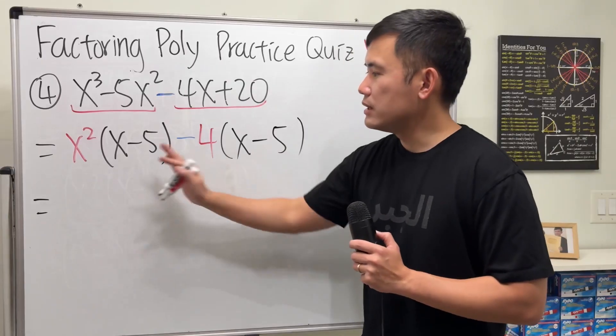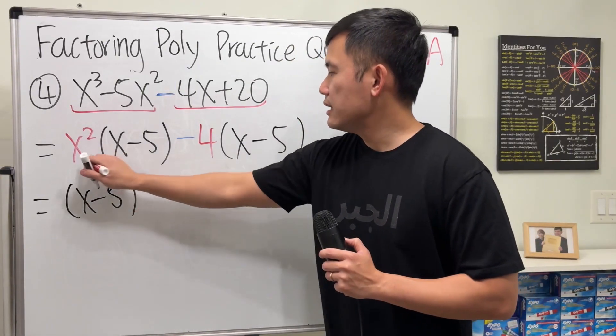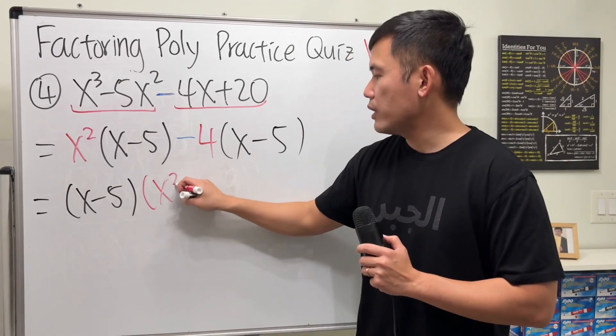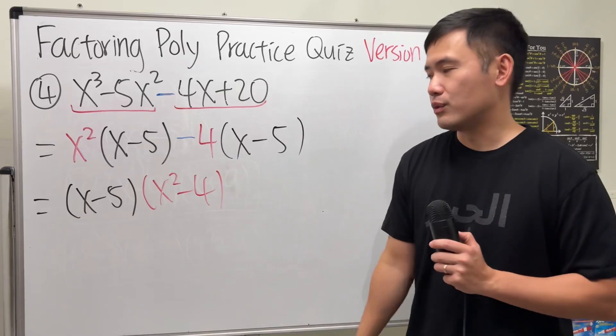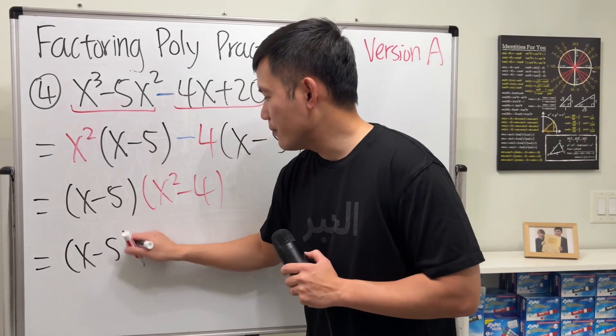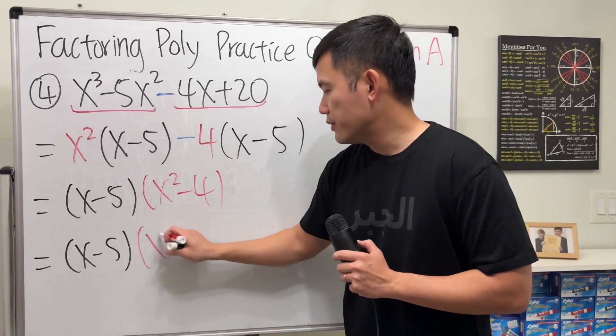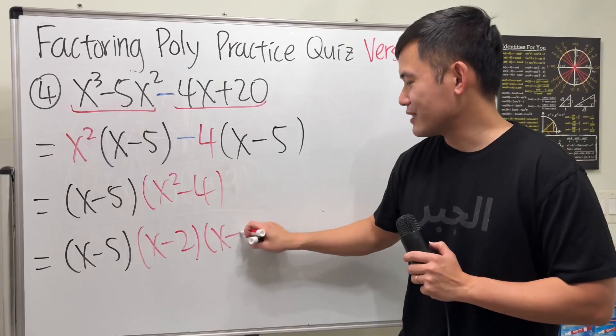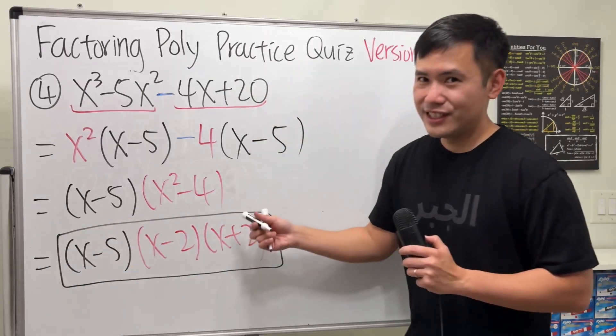Now, factor out the x minus 5, put it right here. And then this and that, we can put it as x squared minus 4. And what can we do? Yes, difference of two squares once again. So this is x minus 5. This is x squared minus 2 squared. So we get x minus 2 times x plus 2. And then we are done. Just like that.